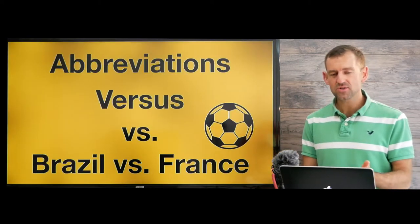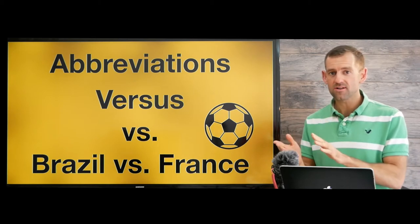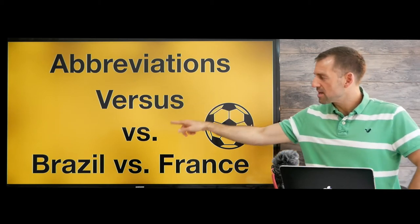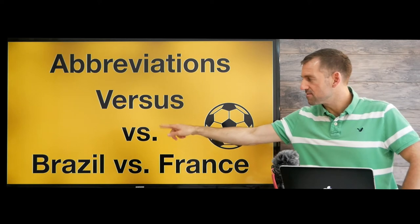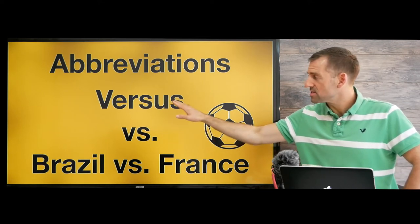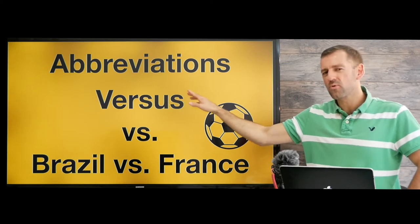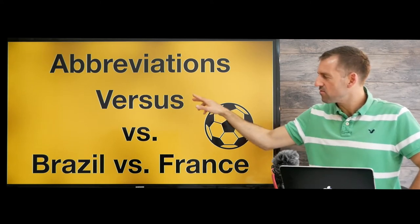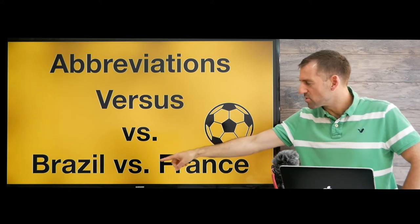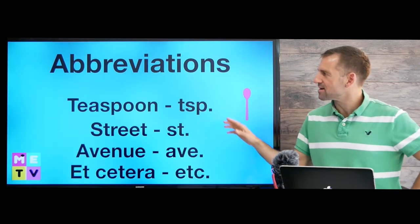Abbreviations are just shortened forms of a word. Look at this: 'versus' becomes 'VS' with a period. This is a very common word in English, but we rarely see it in its full form. We always see it like this — Brazil versus France. Let's look at some more examples.